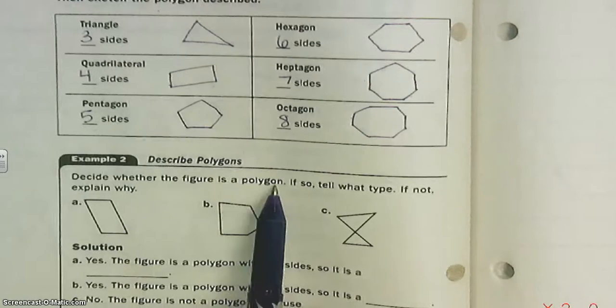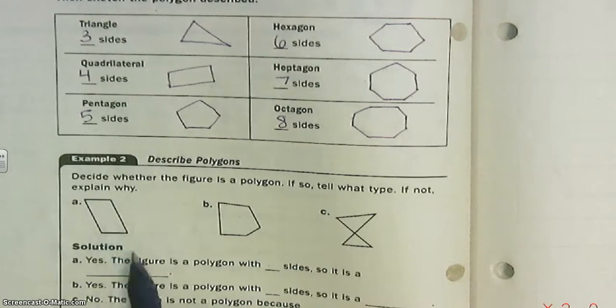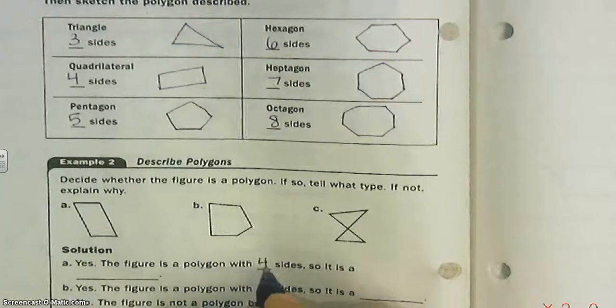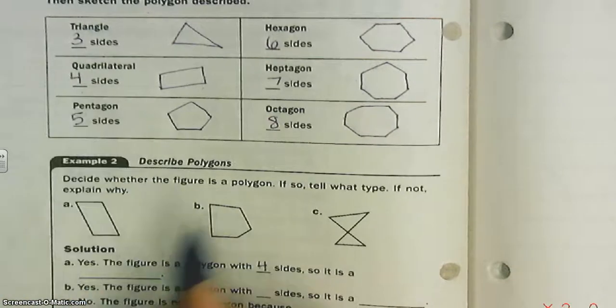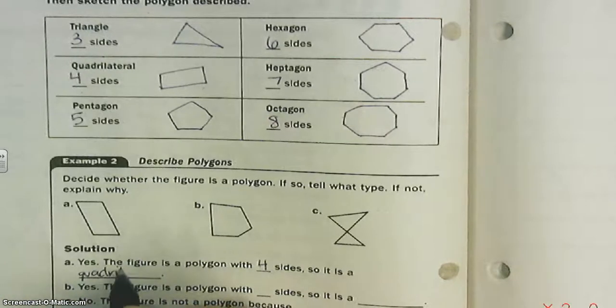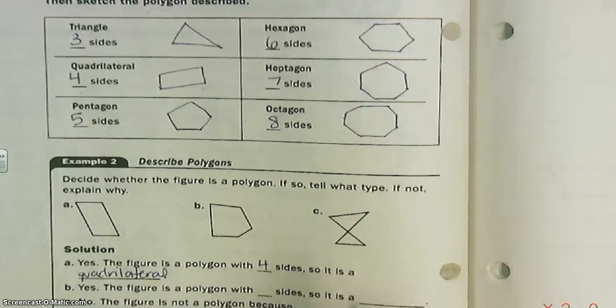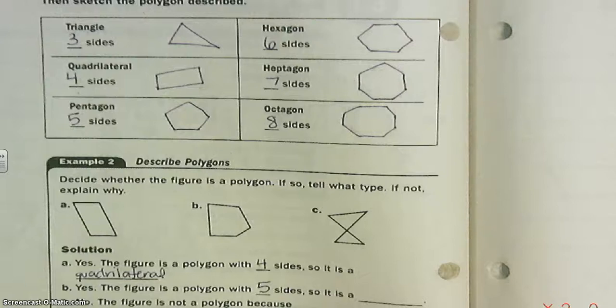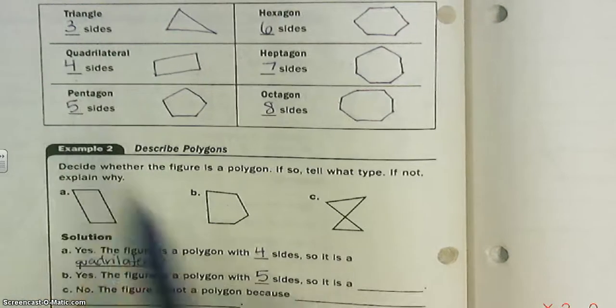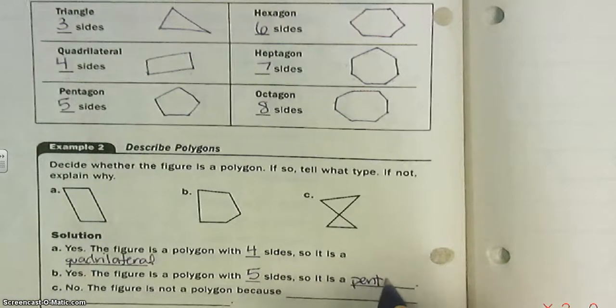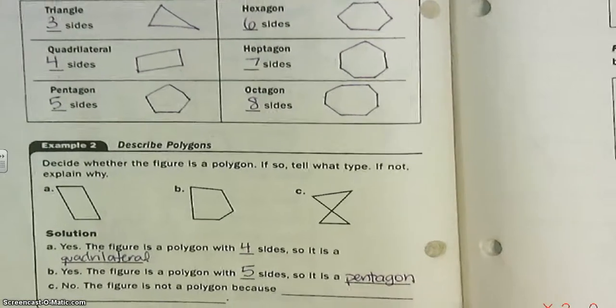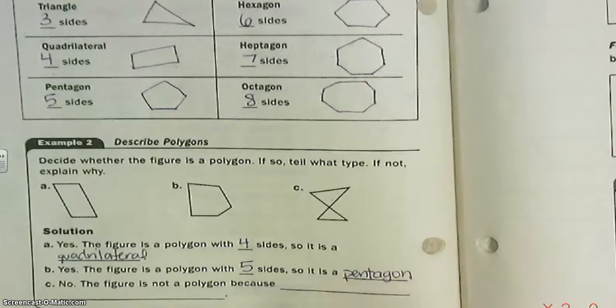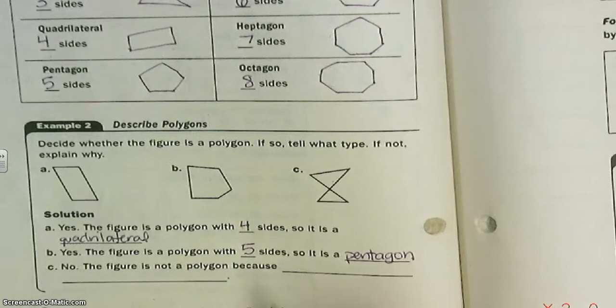Decide whether the figure is a polygon. If so, tell what type. If not, explain why. Well, this is closed. So this is a yes—the figure is a polygon with four sides, and four sides is called a quadrilateral. This is all closed and straight: one, two, three, four, five sides. So if you look up here, five sides is called a pentagon. And this—these sides are intersecting each other more than once. So that is not a polygon.